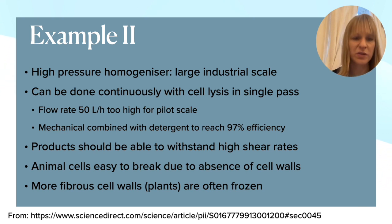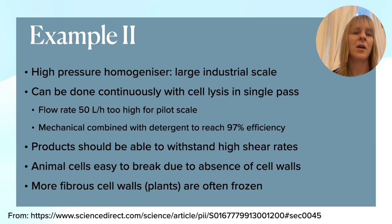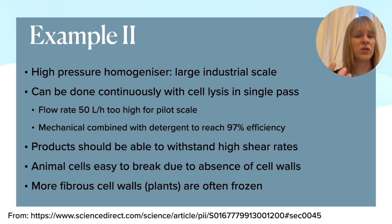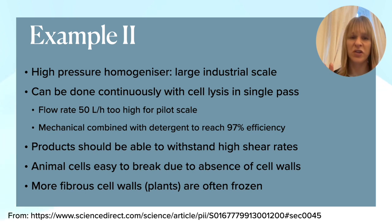There are things you need to consider: you are imposing a high shear rate, which should be high enough to break cell walls but must not damage the product. If you're working with plant cells with tough fibrous cell walls, you often use frozen systems where they become more brittle and easier to break. For animal cells, due to the absence of cell walls, they are much easier, and high-pressure homogenizers are the common standard there.